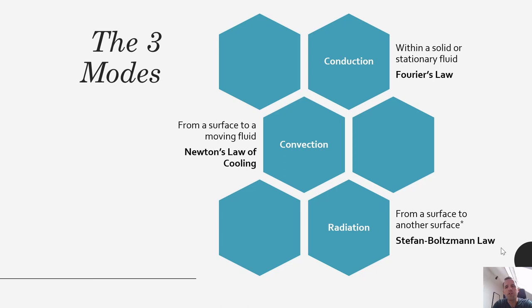As a review, the three modes of heat transfer are: conduction, with a rate equation described by Fourier's law; convection, which is what we'll be talking about today, with a rate equation described by Newton's law of cooling — convection entails heat transfer from a surface to a moving fluid; and finally radiation, which is typically surface-to-surface heat transfer, described by the Stefan-Boltzmann law.